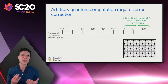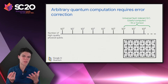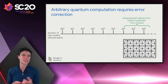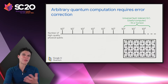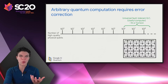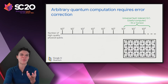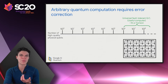Quantum computers are fundamentally error-prone. The quantum information has a short lifetime before it decoheres and escapes from the system. Arbitrary quantum computation will require a system of error correction, which I'll get into more later.